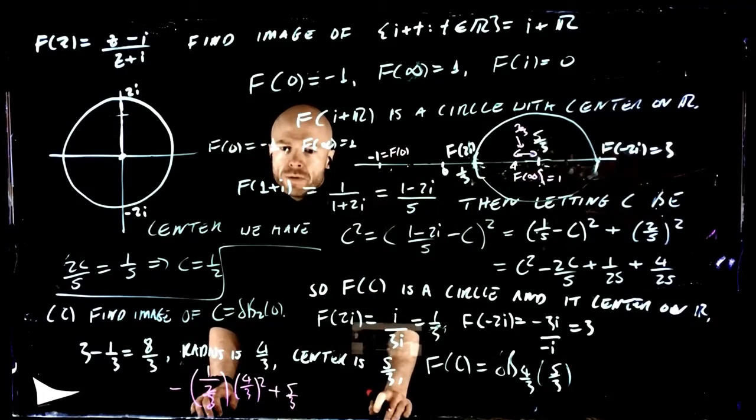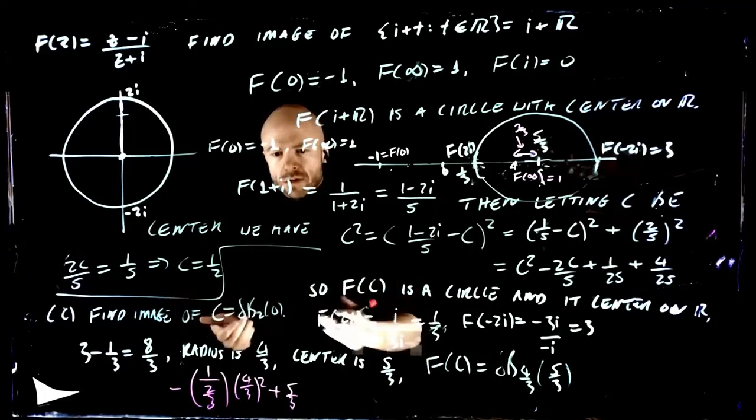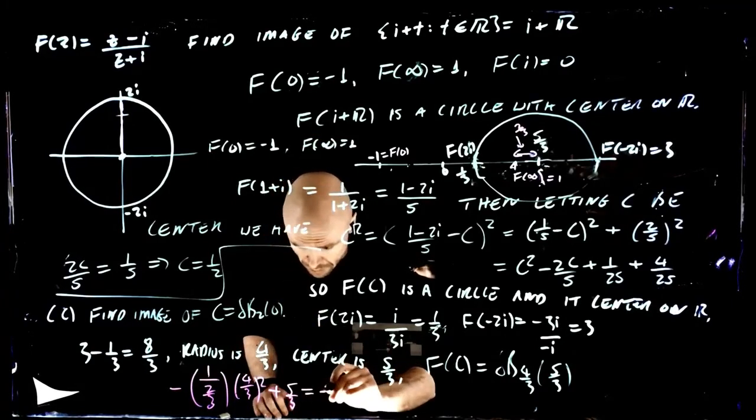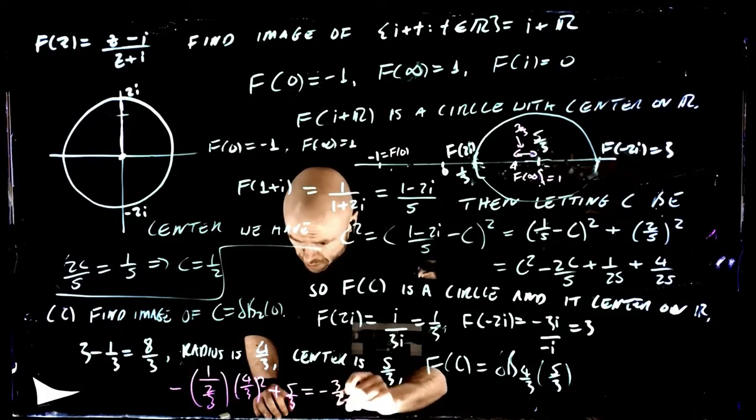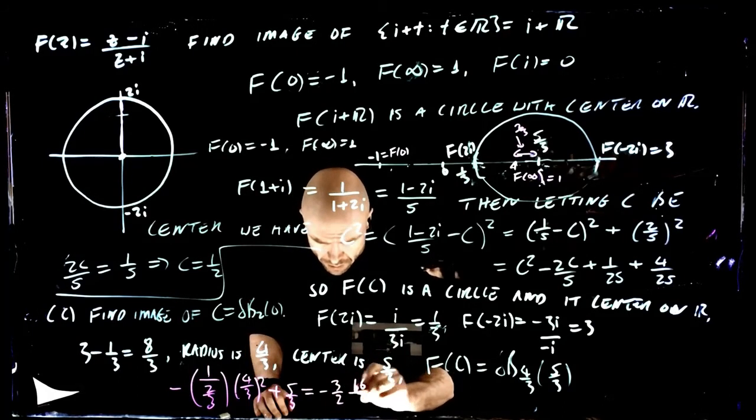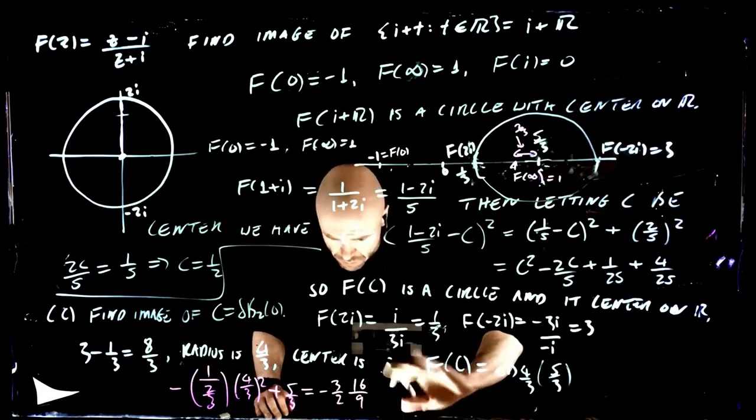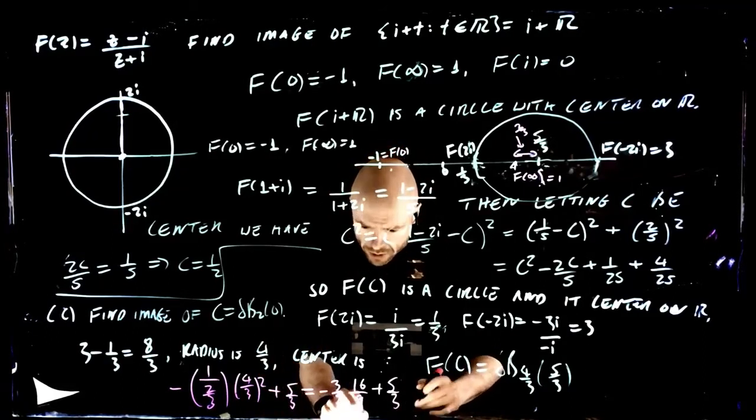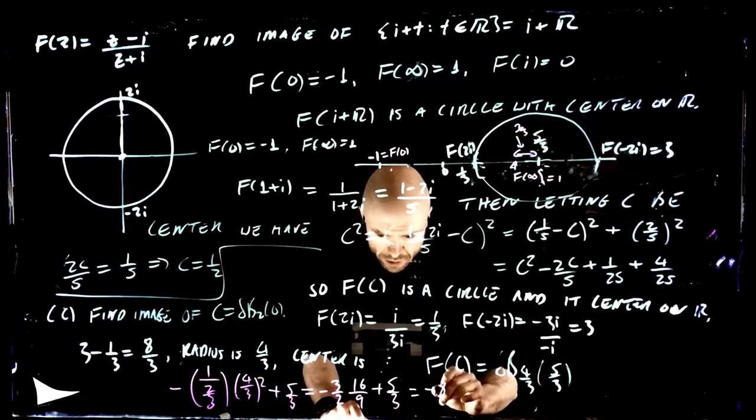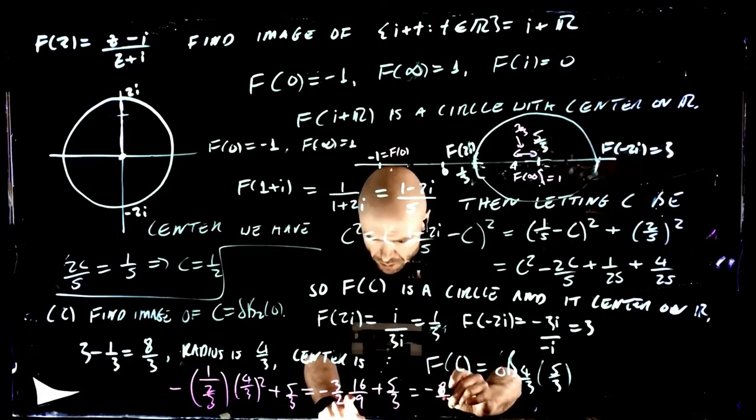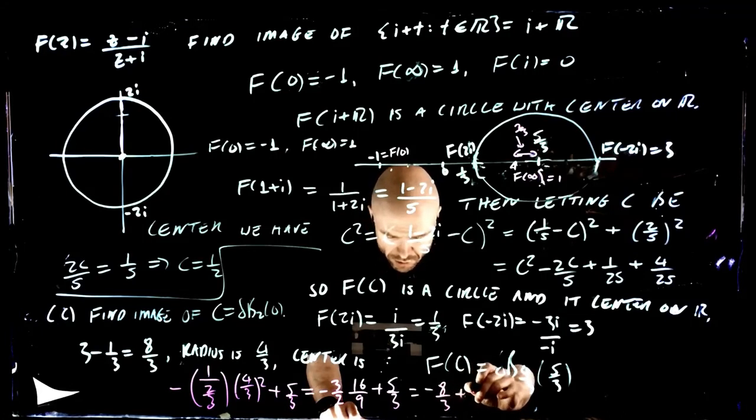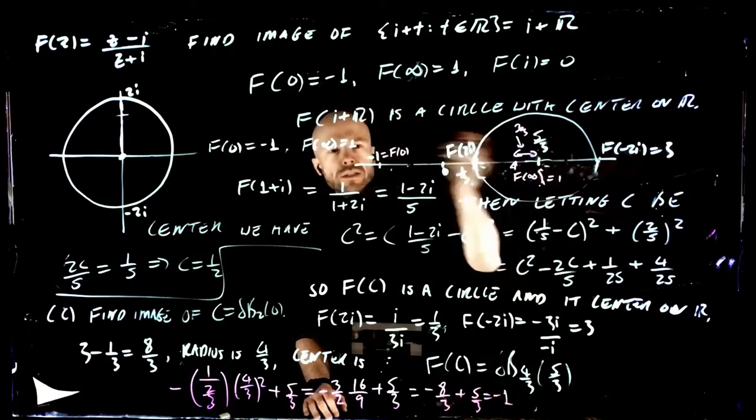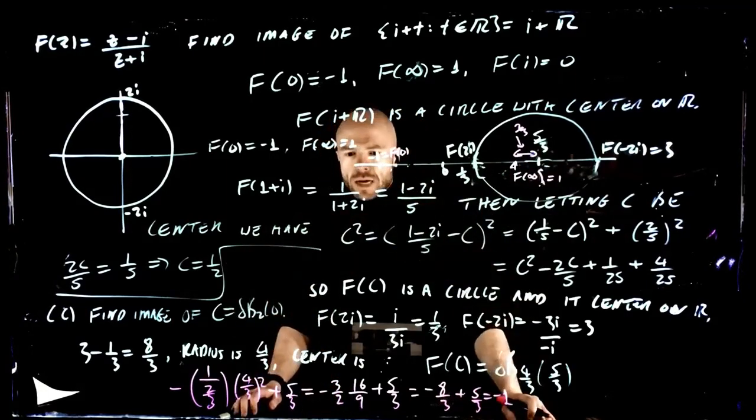So if everything is correct, then this thing should be exactly minus 1. Because that's symmetry across a circle. So let's check if that works out. So this is minus 3 over 2, and this is 16 over 9, plus 5 over 3. We're going to get minus 8 over 3 plus 5 over 3, which is indeed minus 1. So this symmetry is exactly happening as claimed.